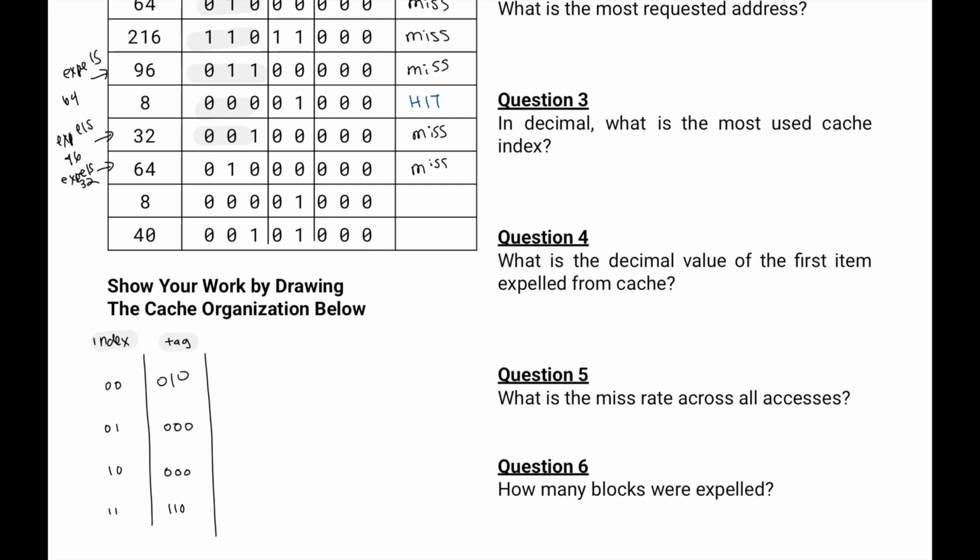Then we'll go to 01. Check the tag 000. Matches. Hit. Finally, we'll go to 40. We'll go to 01. Check for 001 in the tag. Not there. So it'll be a miss. And then this time we're replacing that tag 000 with 001. Now we can get started with answering the questions.